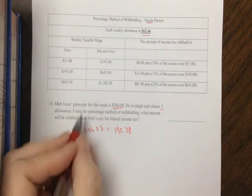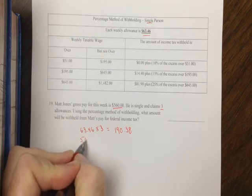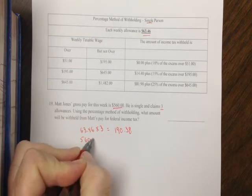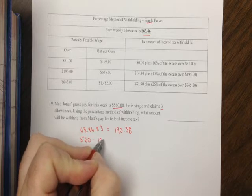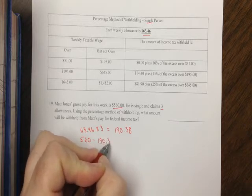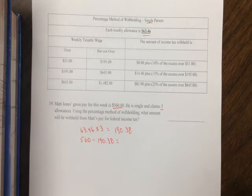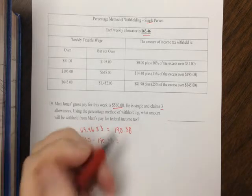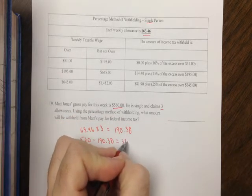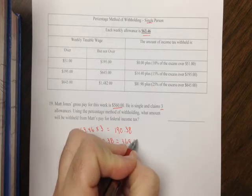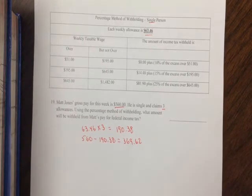You take what he made, $560 for the week, and subtract the allowance. We come up with $369.62. You look on the chart and see where that falls.